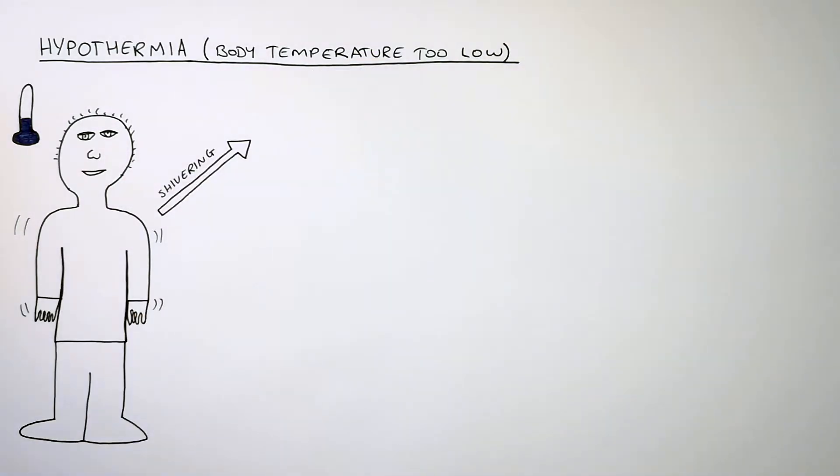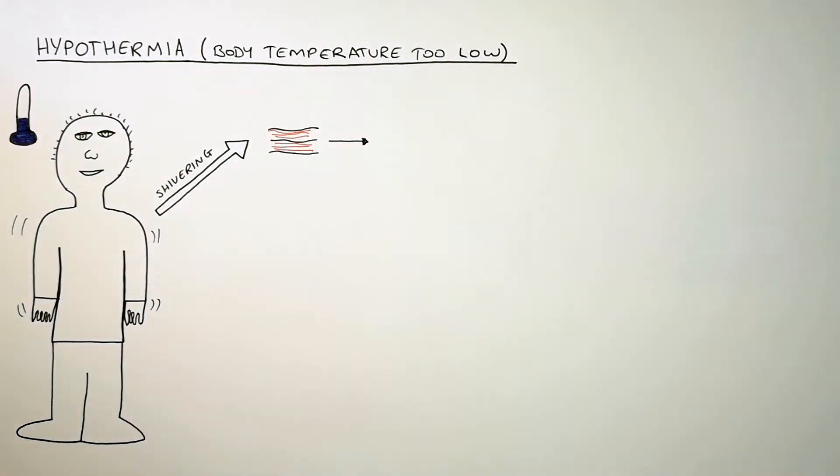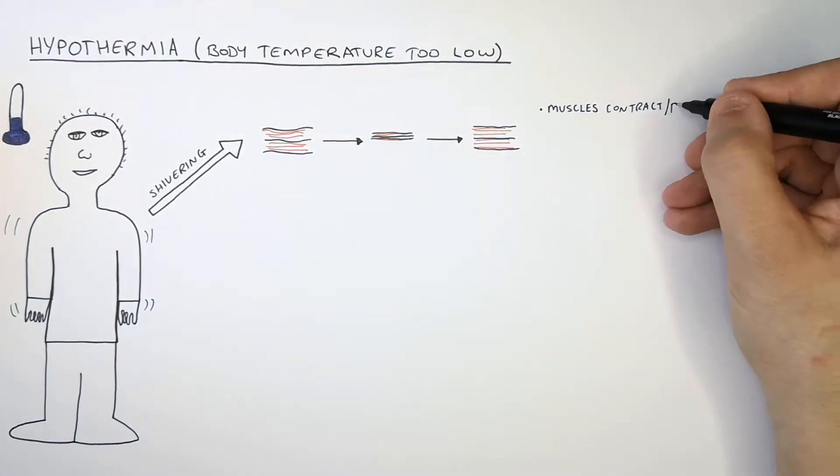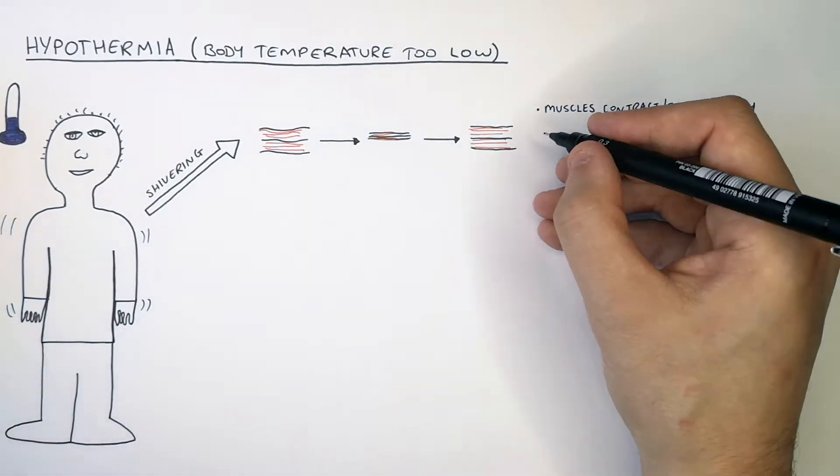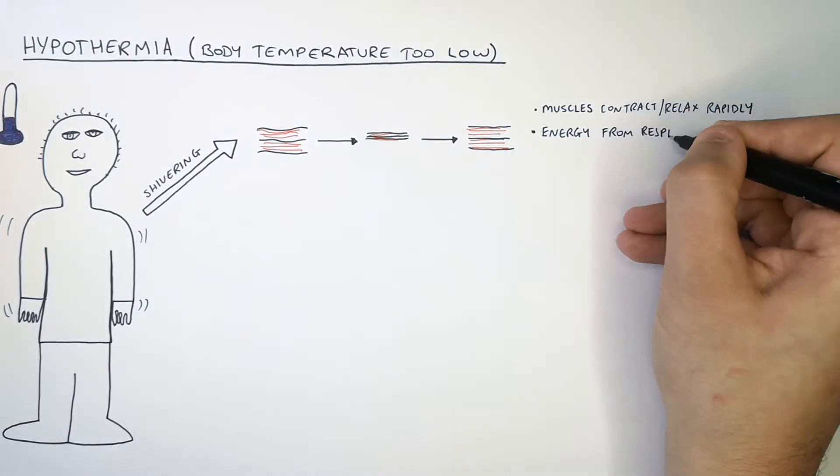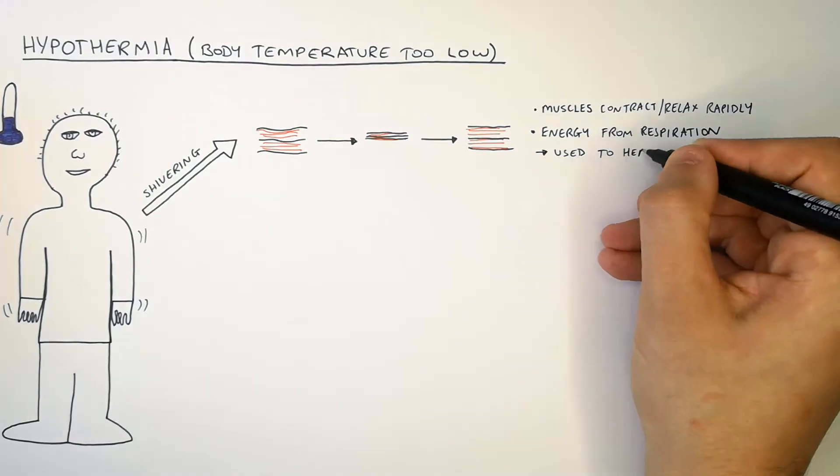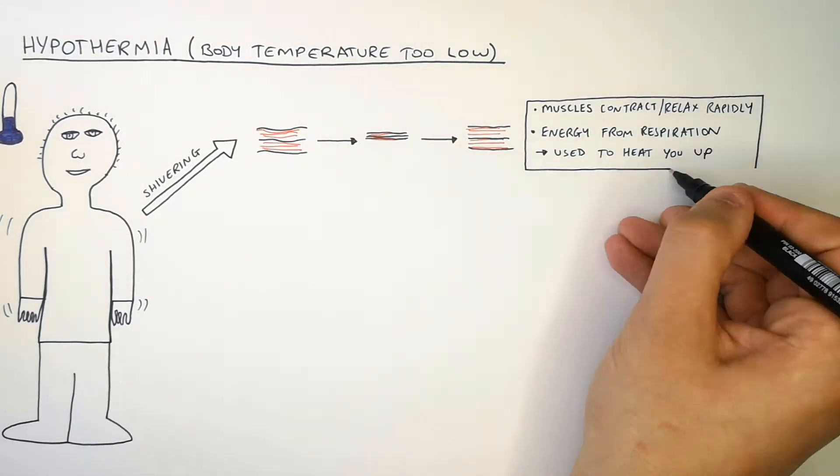Shivering is the process whereby our muscles will begin to contract and relax rapidly. The muscles contract and relax rapidly all over your body. This uses energy from respiration and a byproduct of respiration is heat and this heat is used to slightly warm the body.